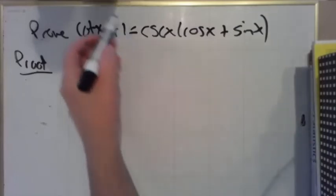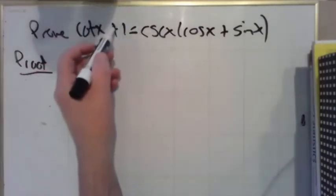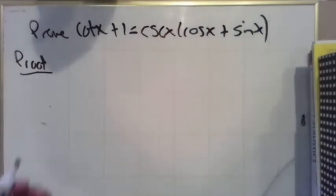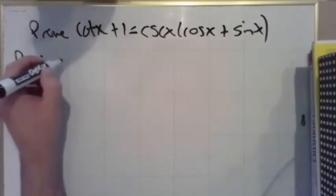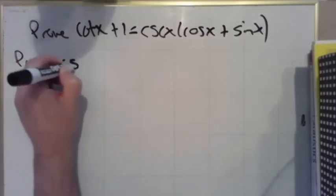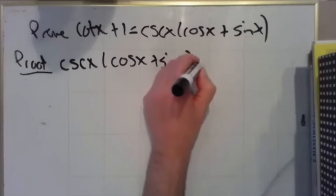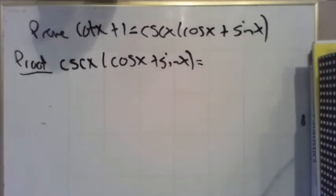So we look the left hand side and the right hand side. The right hand side looks uglier. So that's the one I'm going to start with. Start with the uglier side. Literally just write that down. And then put an equal sign.